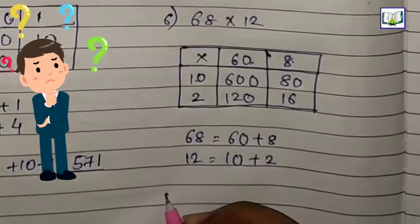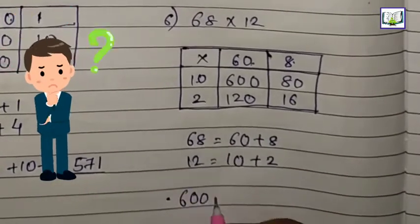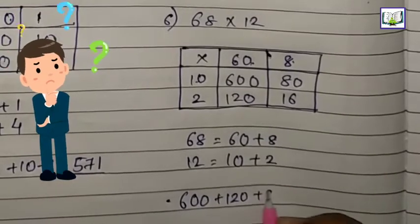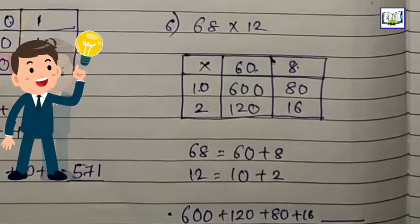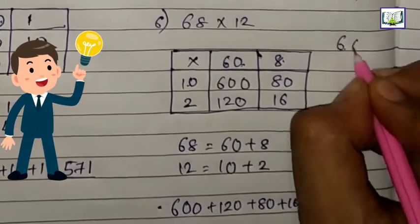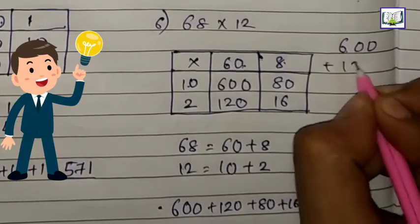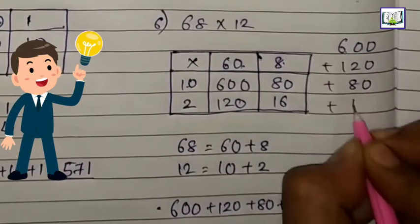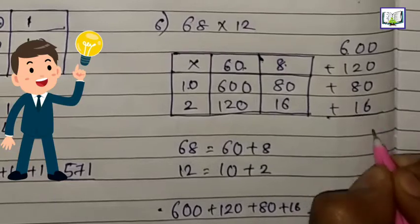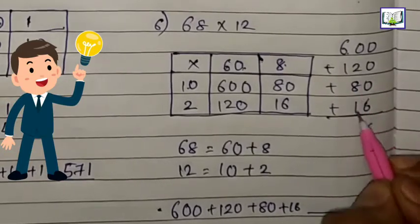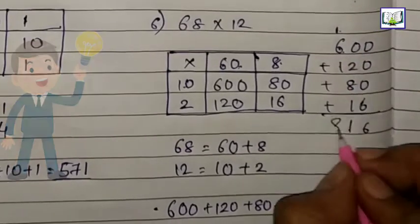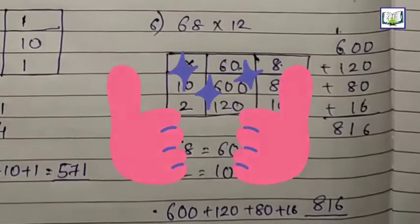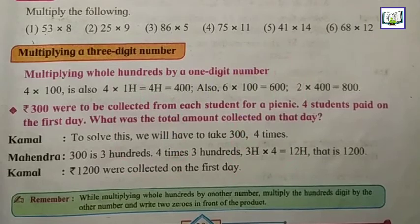Now we will add this all: 600 plus 120 plus 80 plus 16. 6 as it is, 8 plus 2 is 10, 10 plus 1 is 11, 1 carry. 6 plus 1 is 7, 7 plus 1 is 8. So our answer is 816. We have completed the exercise.